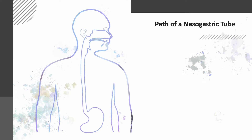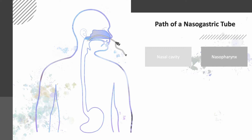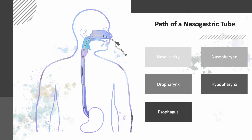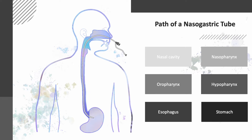Let us firstly recap the normal path of a nasogastric tube and its related anatomy. A nasogastric tube normally passes from the nasal cavity to the stomach. The structures it passes through in its path are the nasal cavity, nasopharynx, oropharynx, hypopharynx, esophagus, and stomach.